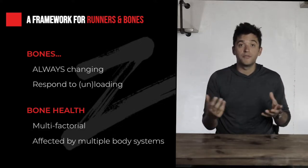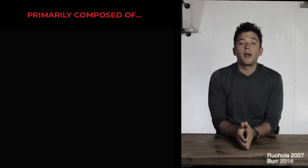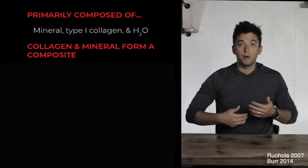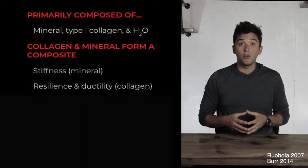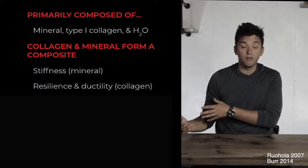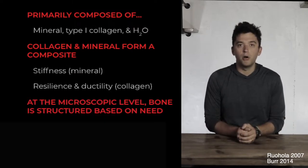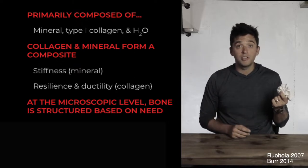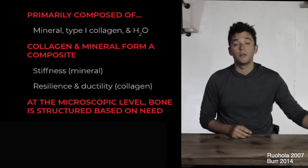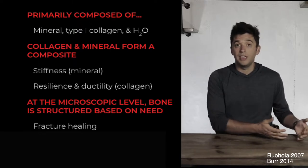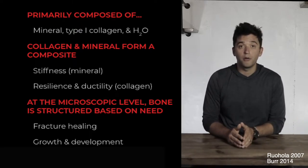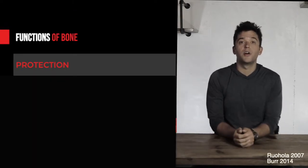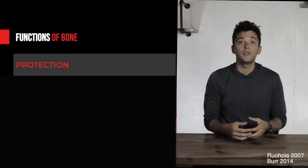Bone health is multifactorial and affected by all our body systems. Our bones are primarily composed of water, mineral, and type 1 collagen. This collagen and mineral composite allows bones to be strong, resilient, and ductile. At the microscopic level, bones are structured based on need — each bone differs depending on whether it's healing a fracture, supporting growth and development, or adapting to specific loads.